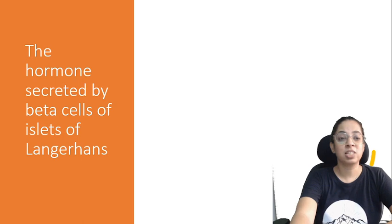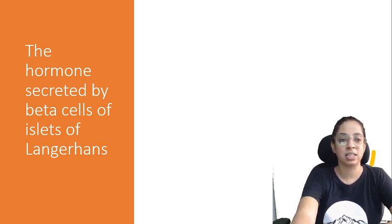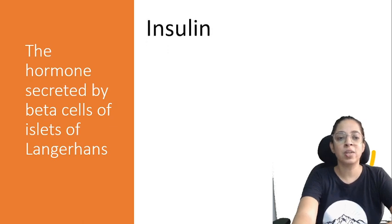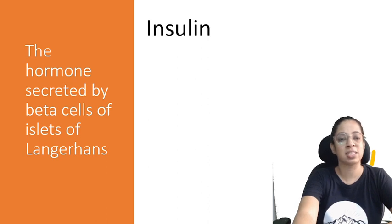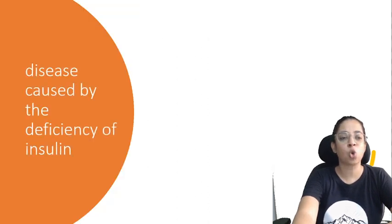The next question is: the hormone secreted by the beta cells of the islets of Langerhans. Insulin is the hormone secreted by the beta cells of the islets of Langerhans. Next is the disease caused by the deficiency of insulin — name the disease caused by the deficiency of insulin.